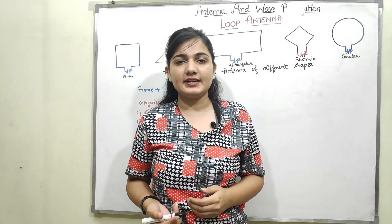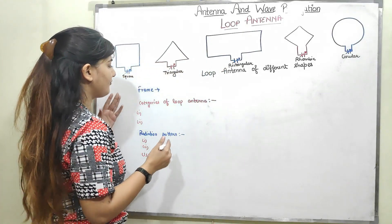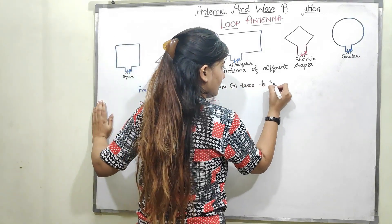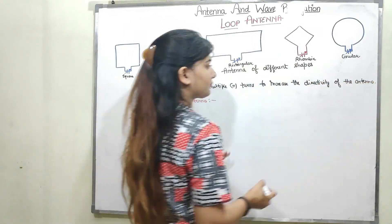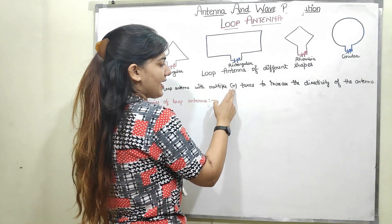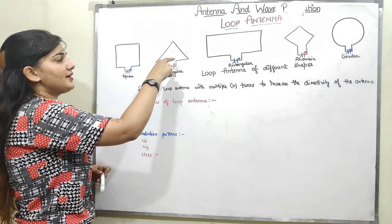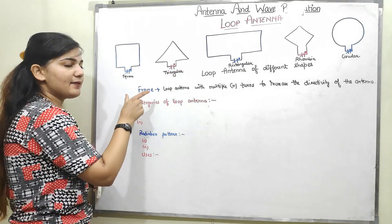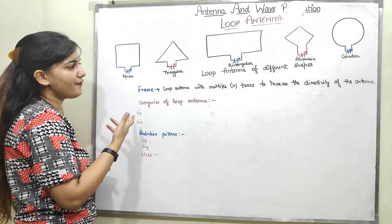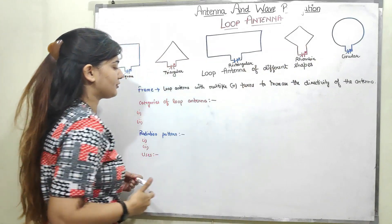I showed you a wire with a single turn. If I have multiple turns of wire, it is called a frame. A frame is a loop antenna with multiple — or n — turns, used to increase the directivity of the antenna. If I have n turns of triangle shape, I get a frame of triangle shape; n turns of square shape gives a frame of square shape. Similarly, I get frames of rectangular, rhombic, and circular shape.